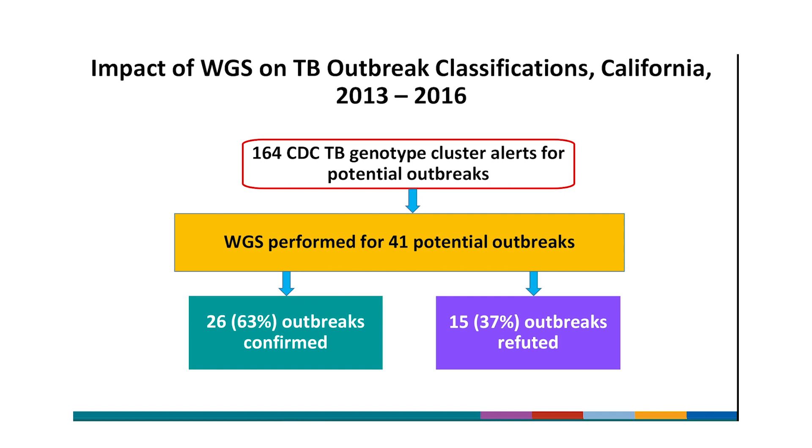Importantly, more than one-third were refuted as outbreaks. All 15 of the refuted outbreaks started as suspected outbreaks. These refuted outbreaks are examples where reliance on conventional TB genotyping would have led us to bark up the wrong tree. We and local partners would have spent precious time and resources looking for epi links between cases that did not exist.